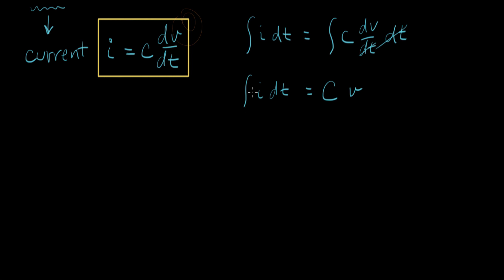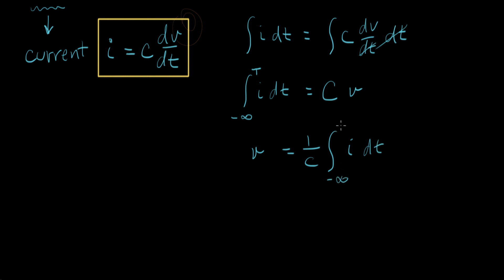What I need to look at next is the bounds on this integral. The bounds are basically from time equals negative infinity to time equals some time T — sort of like the time right now. That equals capacitance times voltage. The voltage on a capacitor has something to do with the summation or integral of the current over its entire life, all the way back to T equals negative infinity. This is not so convenient.